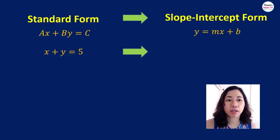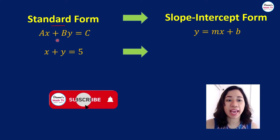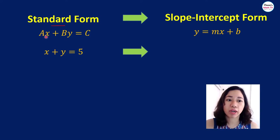Alright, so let us recall first the meaning of standard form. What is the meaning again of standard form? It is of this form, ax plus by equals c. So, meaning to say your variables are on one side and your constant is just on the other side. For example, we have x plus y equals 5.